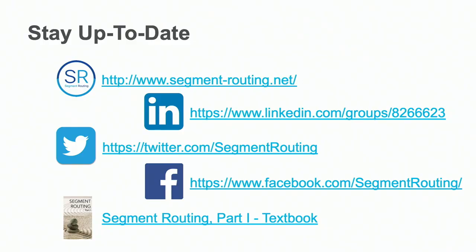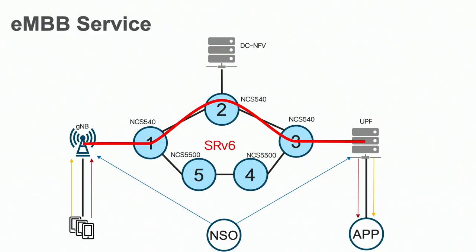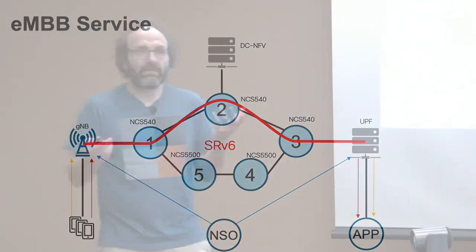SRV6 gives a new way to do service chaining. Current service chaining (VLAN-based routing) is a 'horrible nightmare'—inflexible and hard to troubleshoot. NSH was a step in the right direction, but SRV6 truly solves service chaining.